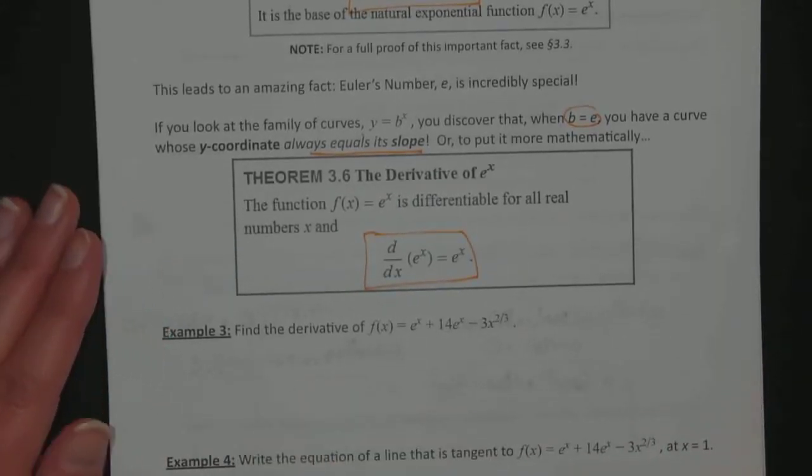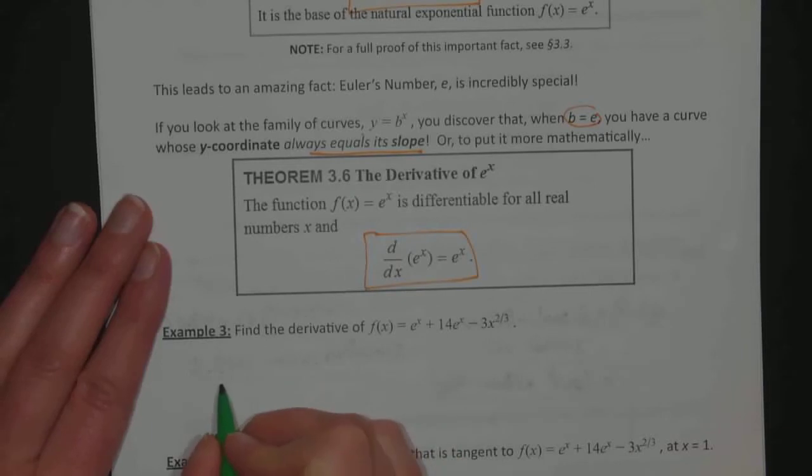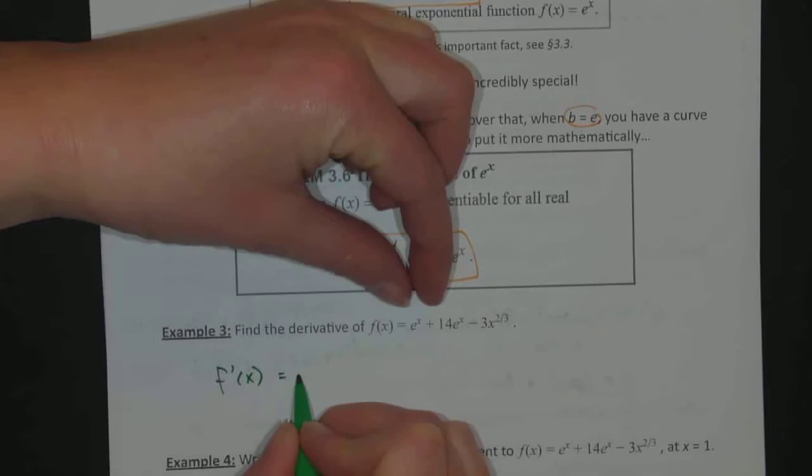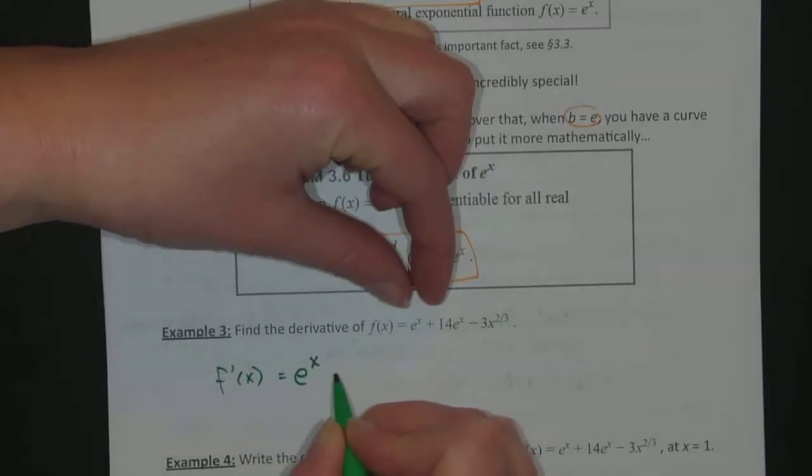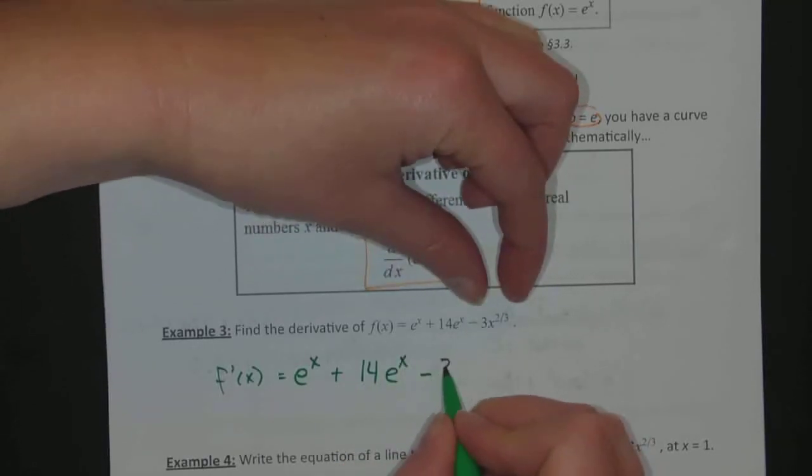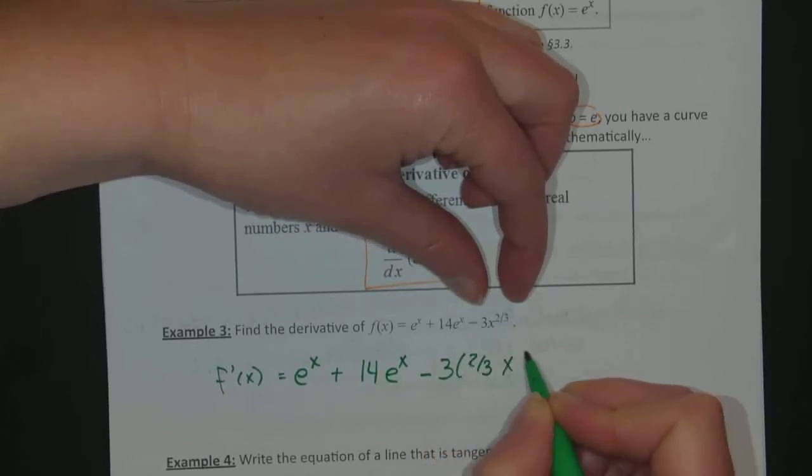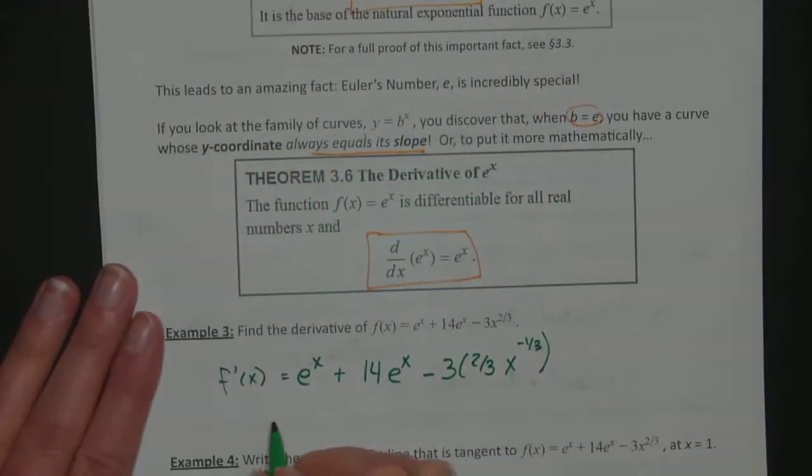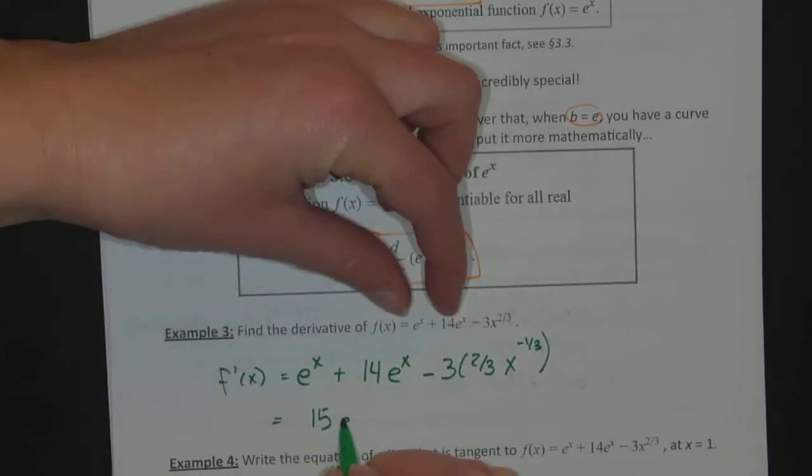Now I can expand the number of things I can find the derivative of from looking at this function, f(x). Its derivative: the derivative of e to the x is exactly the same thing, e to the x, plus 14 e to the x. Well, it's a constant 14 times the derivative of e to the x is e to the x minus, and then the power of x uses the power rule. So it'll be 3 times 2 thirds x to the 2 thirds minus 1 is negative 1 third. If I simplify that, 14 e to the x and e to the x can be added up to 15 e to the x.